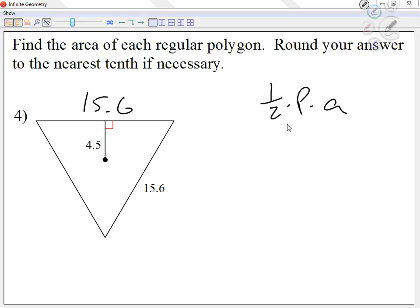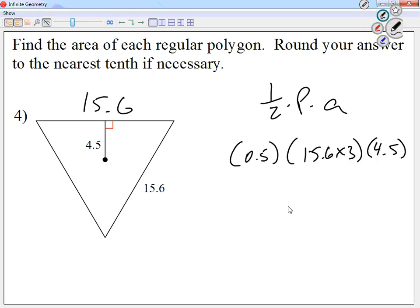Okay, so now here, I'm going to go one half is 0.5. The perimeter is 15.6 times 3. And then the apothem is 4.5. I'm just going to go ahead and multiply everything across. And I get 105.3.